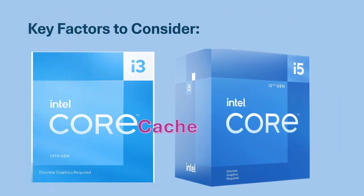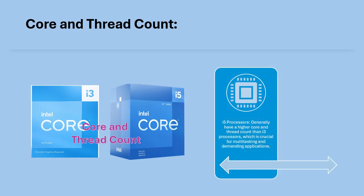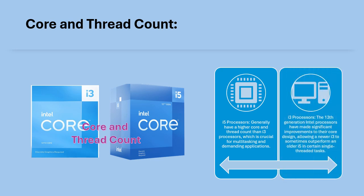Key Factors to Consider — Core and Thread Count: i5 processors generally have a higher core and thread count than i3 processors, which is crucial for multitasking and demanding applications. However, 13th generation Intel processors have made significant improvements to their core design, allowing a newer i3 to sometimes outperform an older i5 in certain single-threaded tasks.